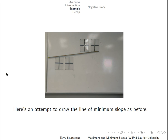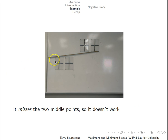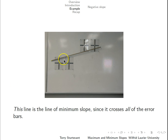Here's an attempt to draw the line of minimum slope as before — but it misses the two middle points. If you notice this point, the corner is here and the line is above it. The corner of this one is here and the line is below it, so we can't actually use that line. If we change it and catch the upper corner of this rectangle and the lower corner of this rectangle, now it touches both of these and goes through these. So now we have this as the line of minimum slope, because it crosses all of the error bars.